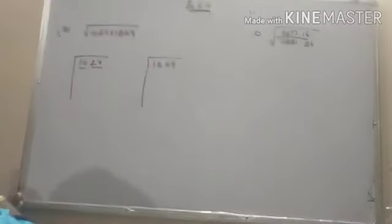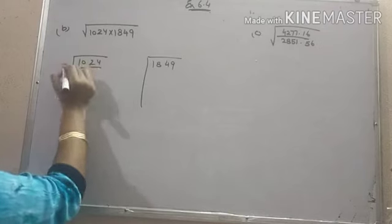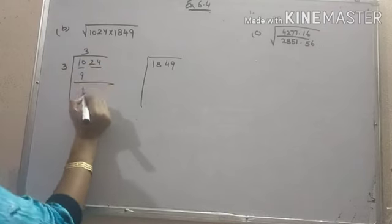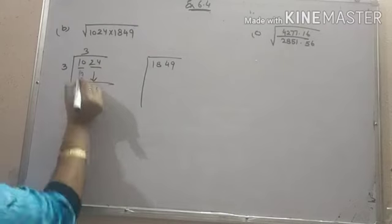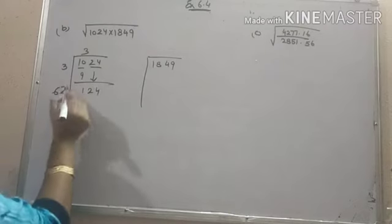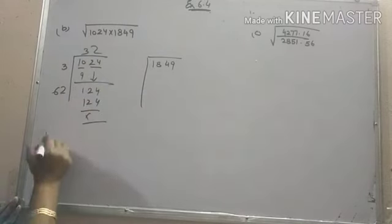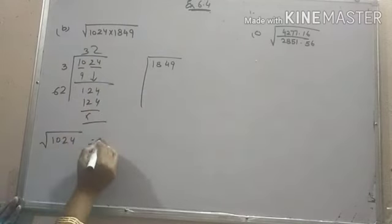Make the pairs from right to left. And you will get 3 times 3 are 9, 1, bring the next pair down 24, double of 3 is 6, now it will go on 2. So under the root 1024 is equal to 32.